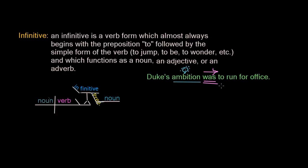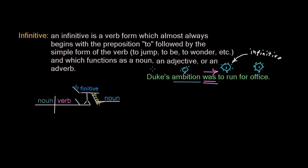To run for what? To run for office. Now Jeb is not running for a brick and mortar office — he's running for a political office. So we call that a concept. The action of running for office is also a concept. Our infinitive is functioning as a noun. We have an adjective — a possessive noun. Possessive nouns and possessive pronouns most often function as adjectives unless they stand by themselves. Whose ambition was it? It's Duke's ambition.